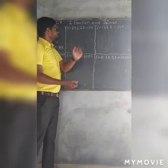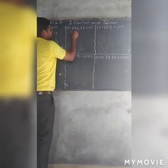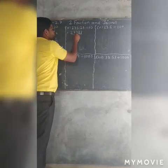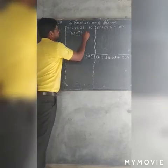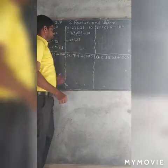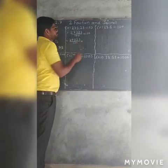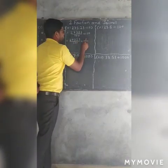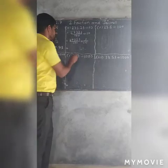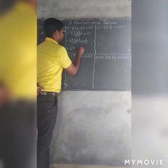Second sum: 273.23 divided by 10. First, move into fraction. After the decimal point there are 2 numbers, so we use 100. So 27323 over 100, divided by 10. Multiply by reciprocal, 1 over 10. Now we have zeros: 1, 2, 3. Our answer is 27.323.